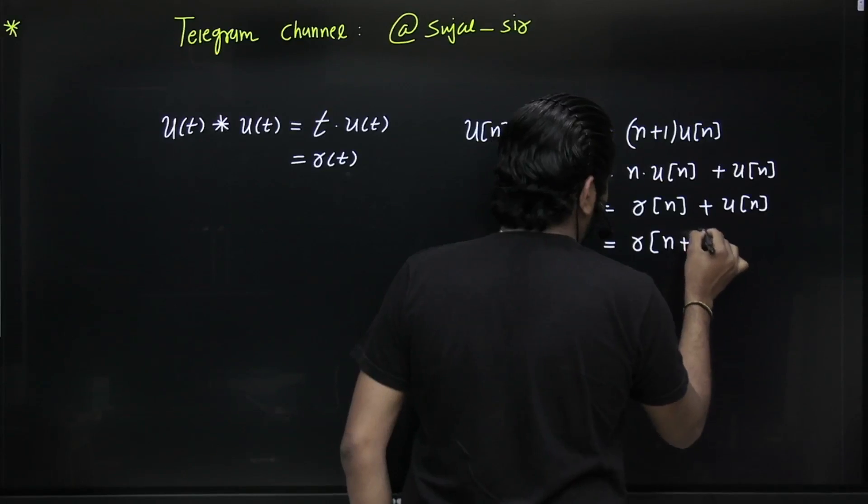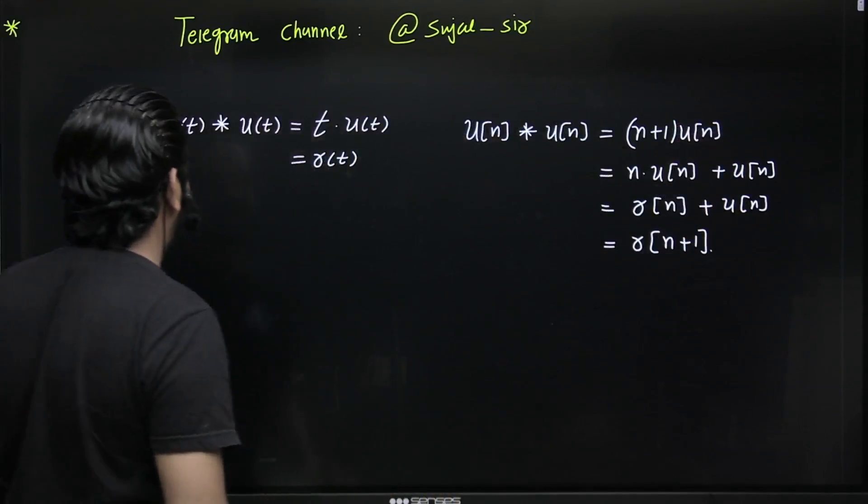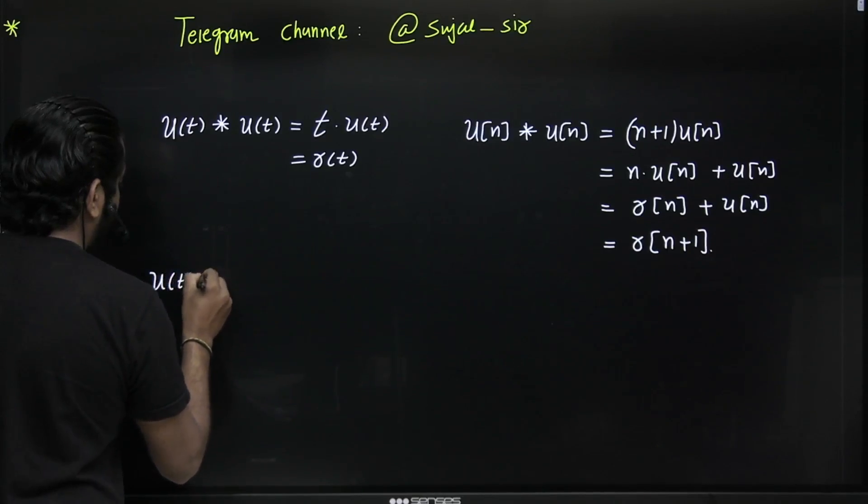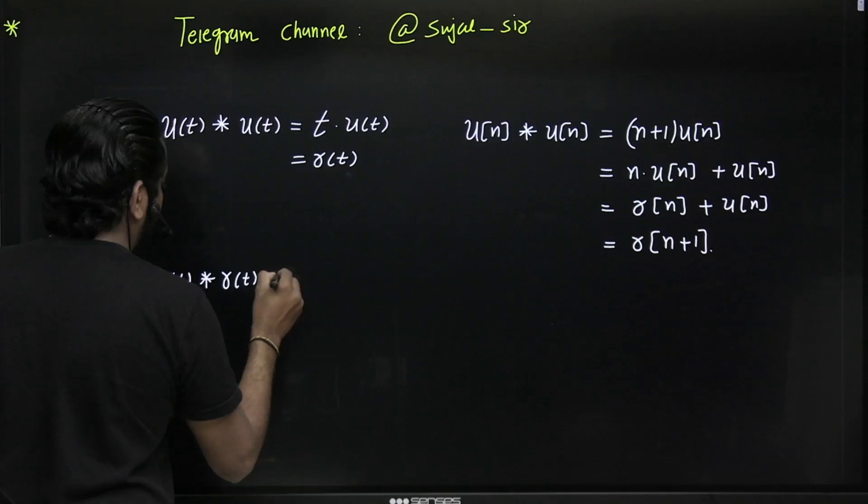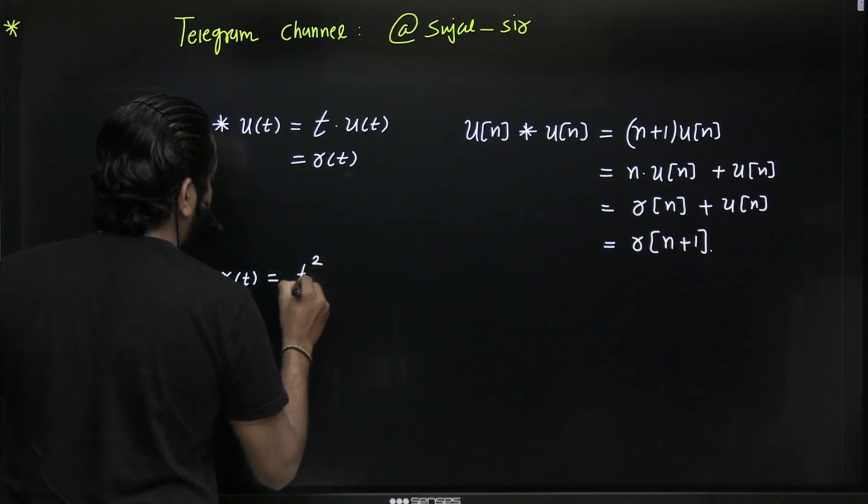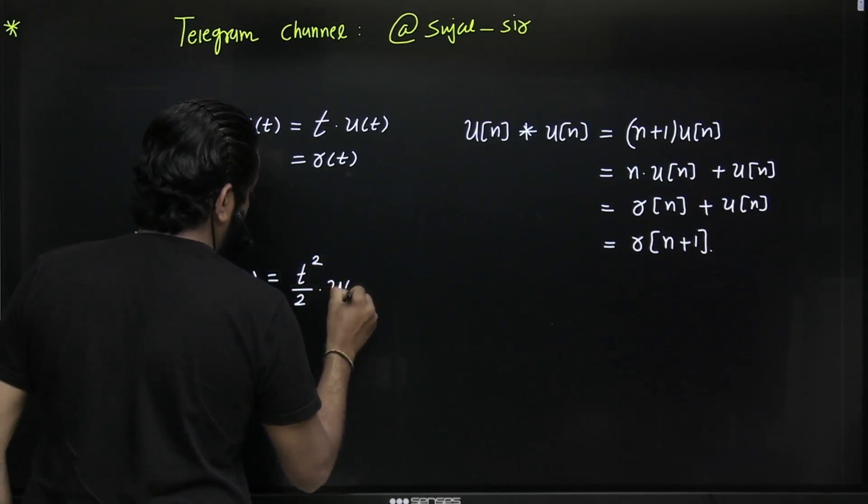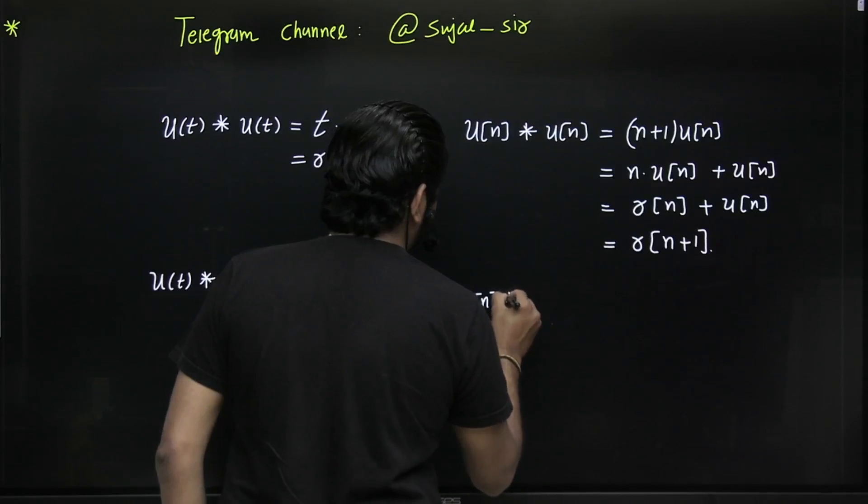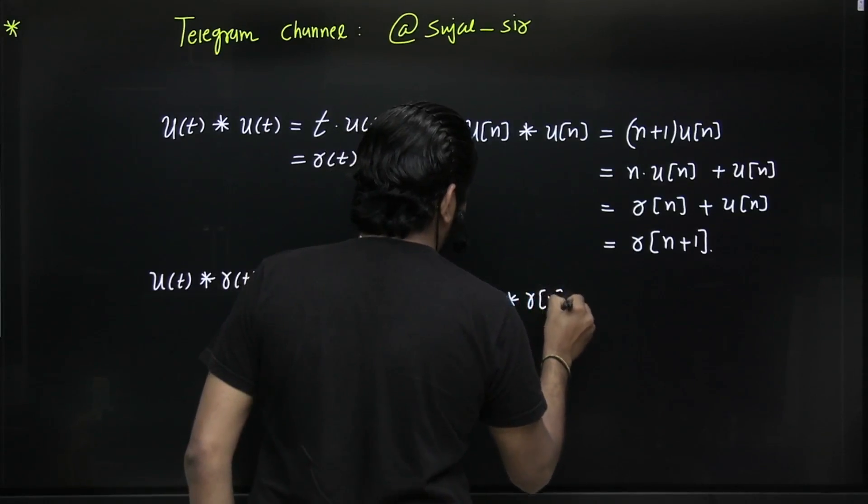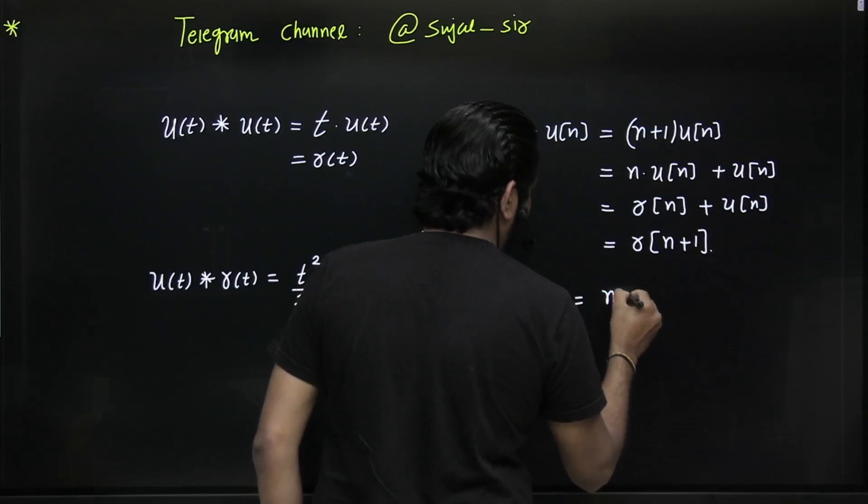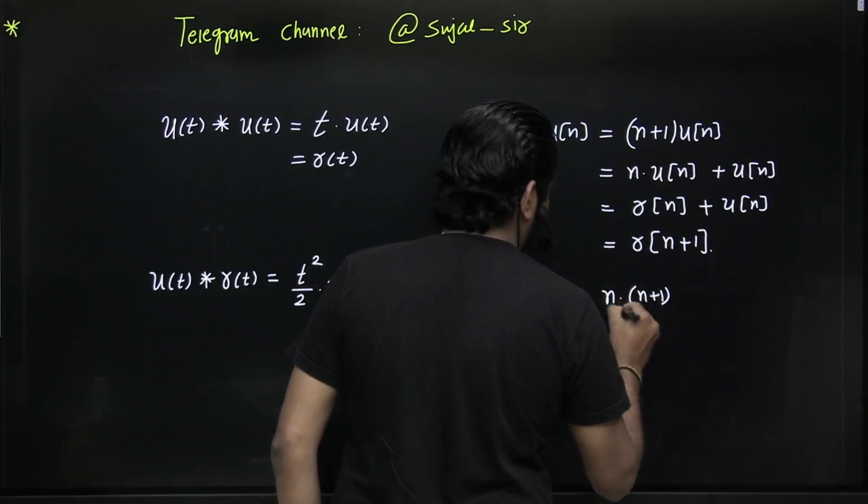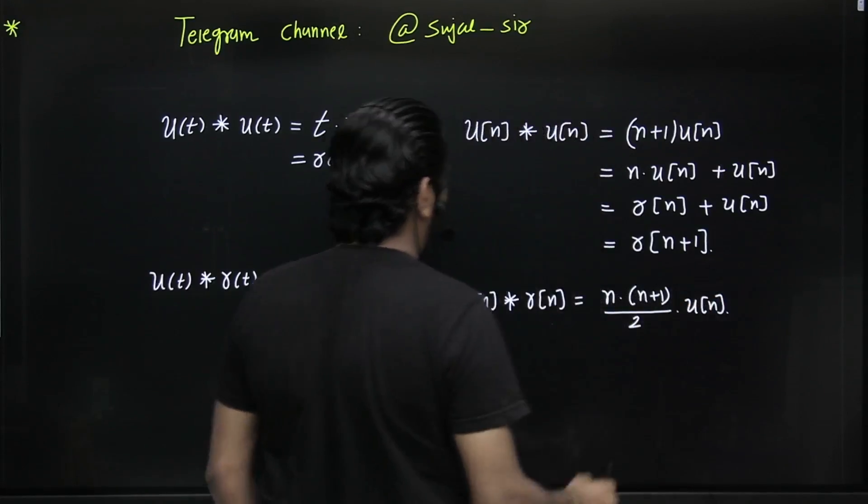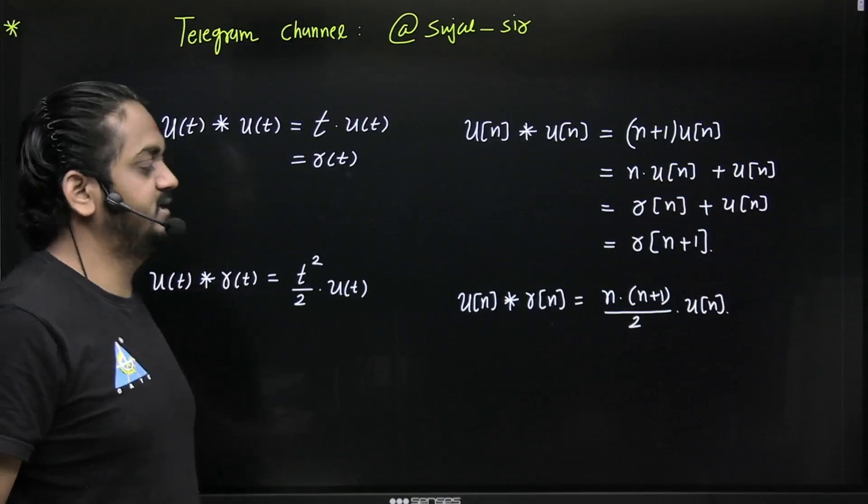You can check this. Similarly, convolution of u(t) with ramp function is t²/2·u(t), and convolution of unit step sequence with ramp sequence is n(n+1)/2·u(n). Remember this difference.